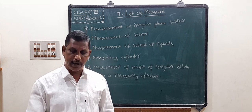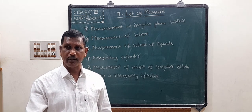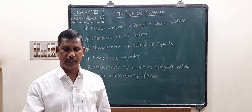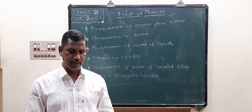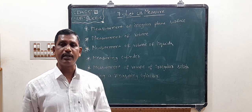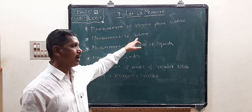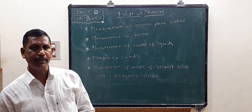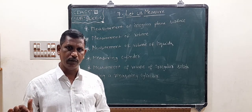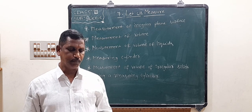We can use the graph paper to get a more accurate answer for any given irregular shape. Now we will move to measurement of volume. Volume can be measured for liquids, gases, and solids.